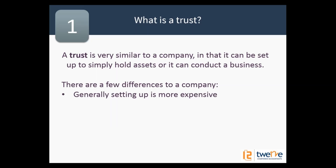There are a few main differences between a trust and a company. Firstly, it's a little bit more expensive to set up. With a company you just go to ASIC, pay filing fees — maybe $1,000 — and off you go. But with a trust it's more complicated: you need a trust deed, a trustee, and a few other documents. You're looking at maybe $2,000, plus there are ongoing accounting and legal fees which are a little bit more expensive as well.